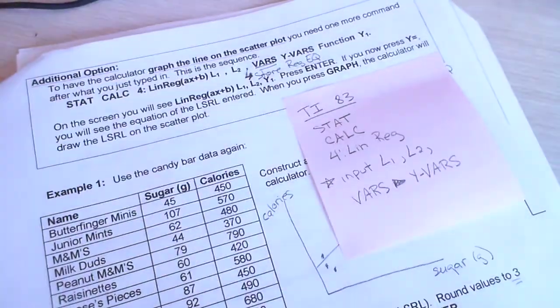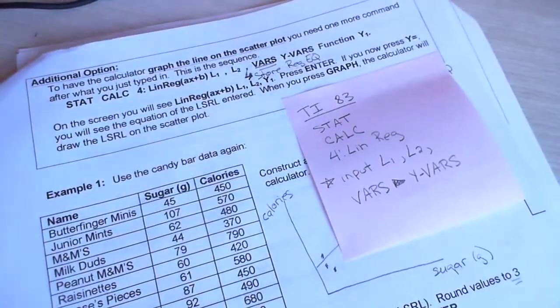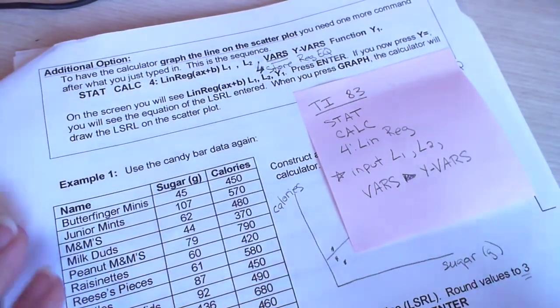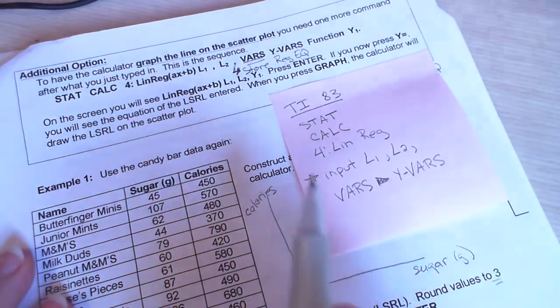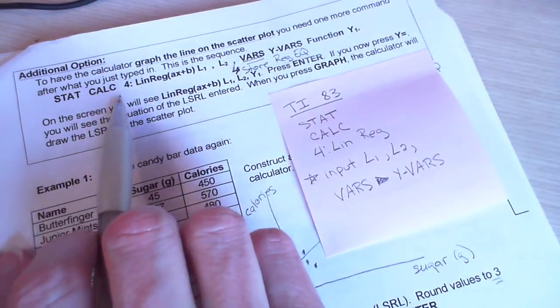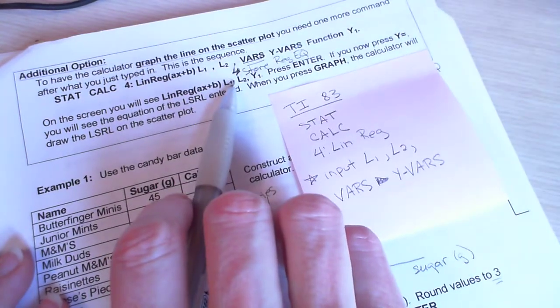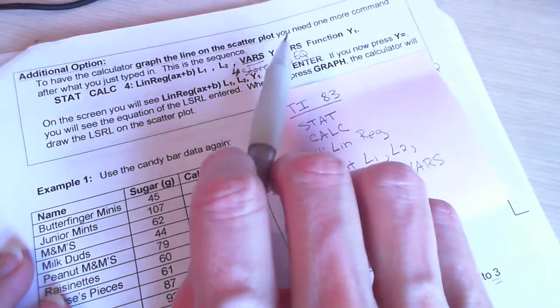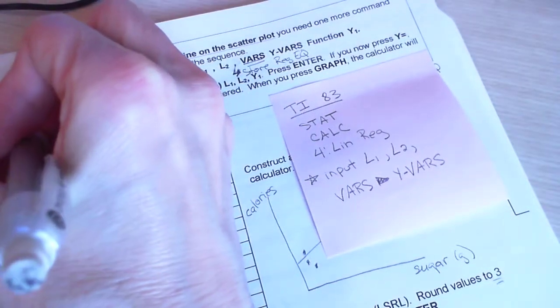This is the second video for section 11.5. We're going to start with example 2, but before we go to example 2, I want to go back to the instructions for graphing that least square regression line. Because the instructions I went through in the first video where I talked about the stored equation, that is for a TI-84.